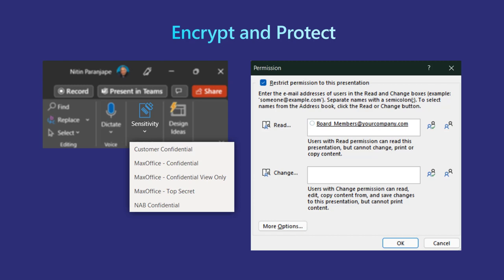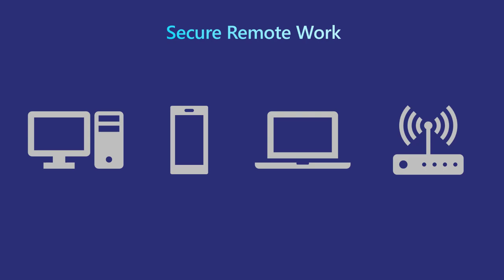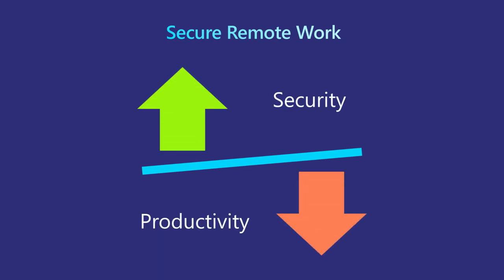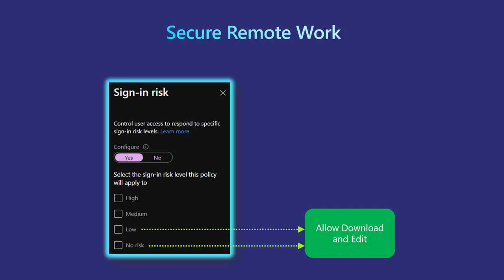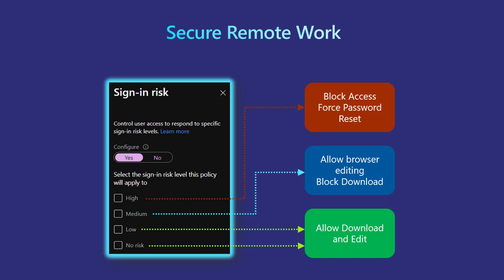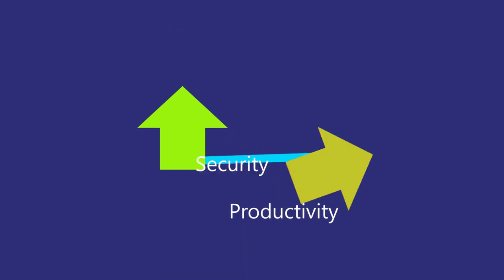The benefit of encryption is that even if a file is copied onto a USB and given to your competitor, they can't open it. We are also worried about people working from home, because they may be using personal devices and networks that are not very secure. The solution is not to just block their access to files — if you do that, how will they work? The balance is achieved through a risk score assigned when you log into Microsoft. If the score is low, allow people to work on files. If moderate, allow access only through a browser so they can't download locally. If very high, block access and force the user to change their password. So depending on the condition, you decide the action — security plus productivity.